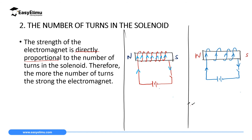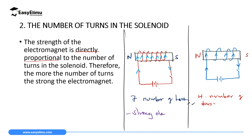As you can see, in the first setup we have seven number of turns, and in the second setup we have only four number of turns. Where we have more number of turns, we will have a strong electromagnet. Where we have only four number of turns, there will be a weak electromagnet. So the more the number of turns, the stronger the electromagnet; the smaller the number of turns, the weaker the electromagnet formed.